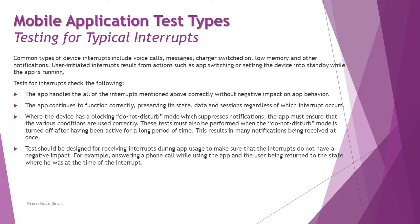Turning off do-not-disturb after a long period results in many notifications being received at once. The test should also be designed for receiving interrupts during app usage to make sure they do not have a negative impact — for example, answering a phone call while using the app, with the user being returned to the state where they were at the time of the interrupt.